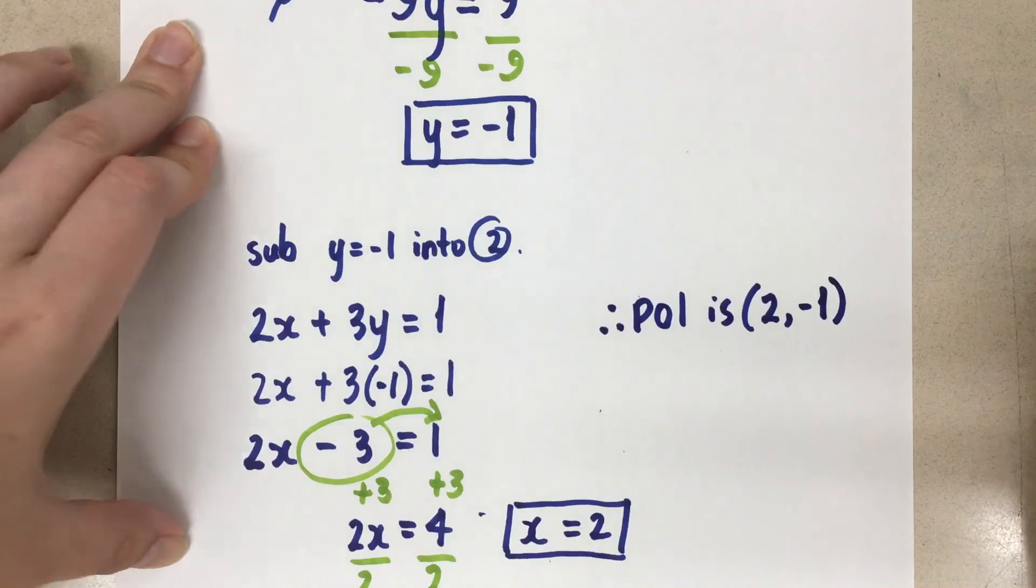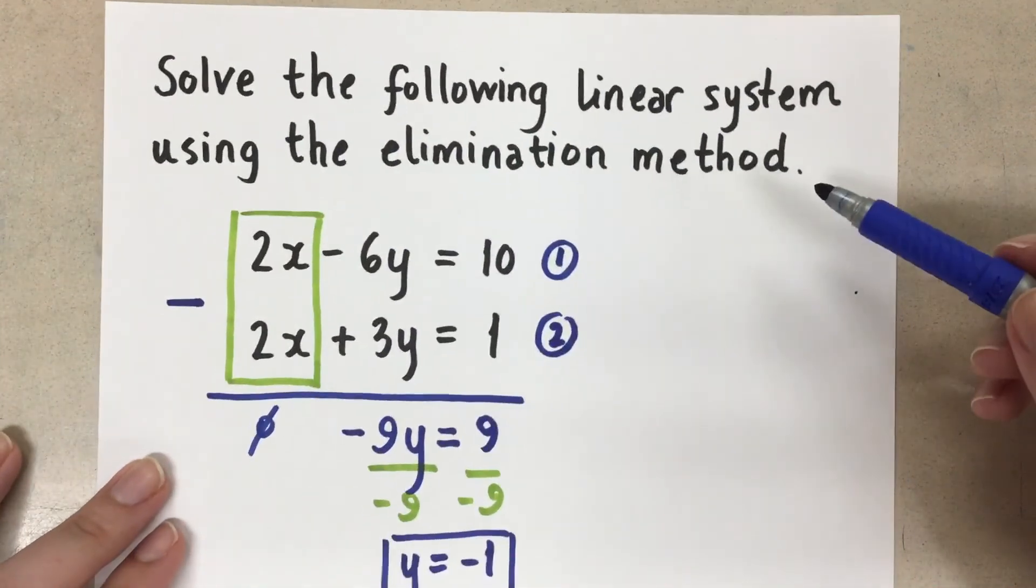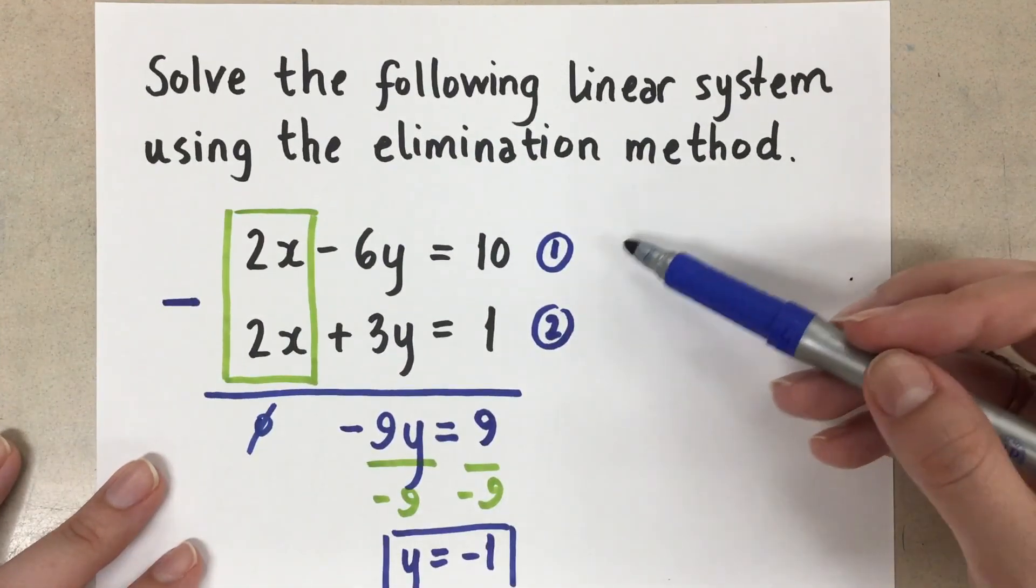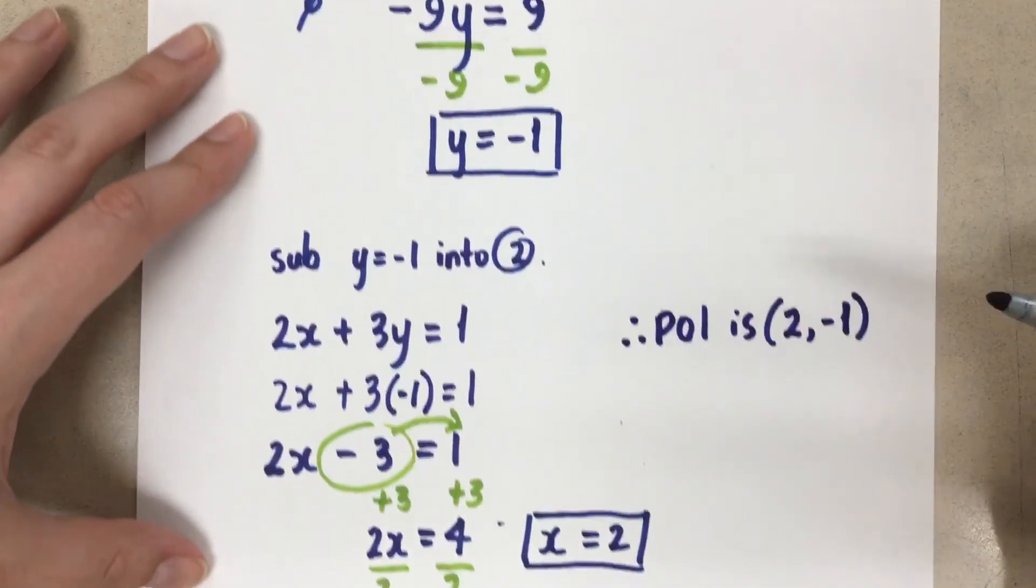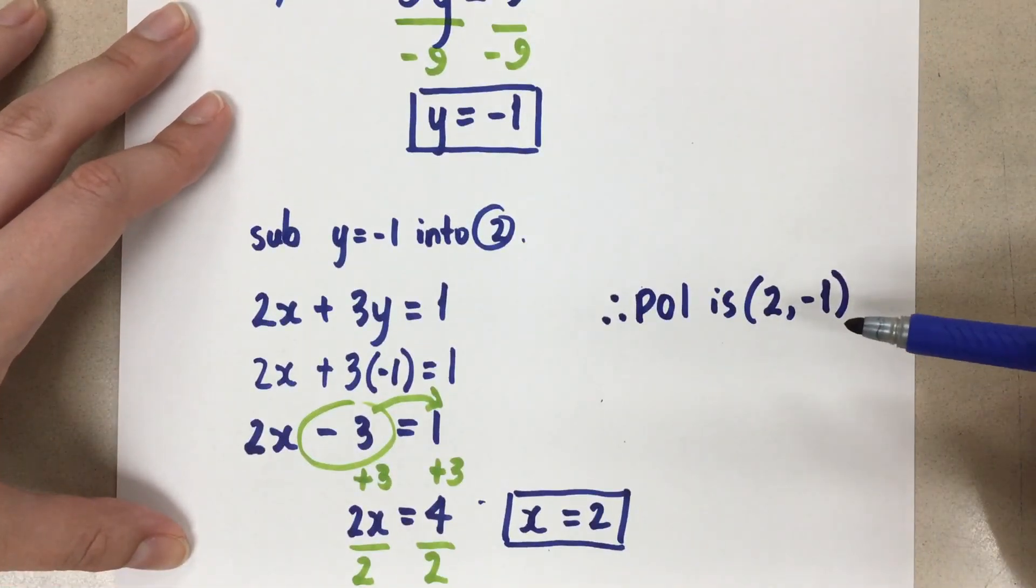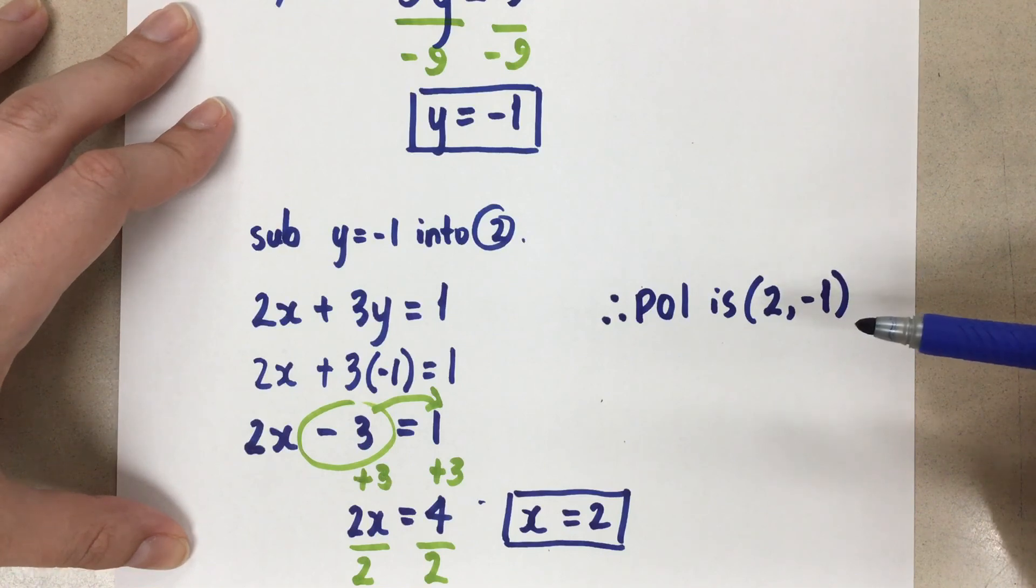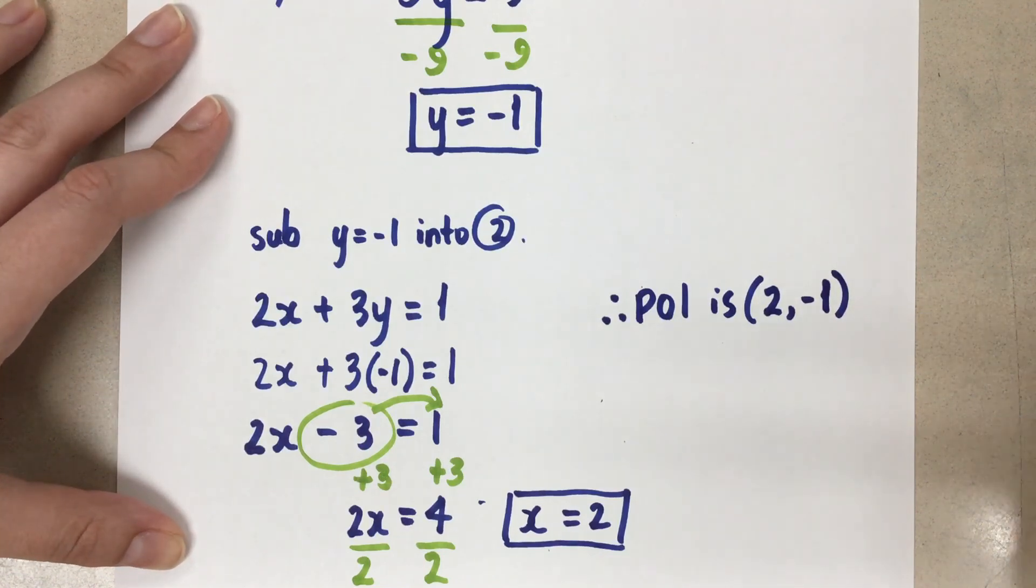So the solution to a linear system is always the point where the two lines cross. The point of intersection for this linear system is two, negative one. Thanks for watching. Mrs. A loves math.